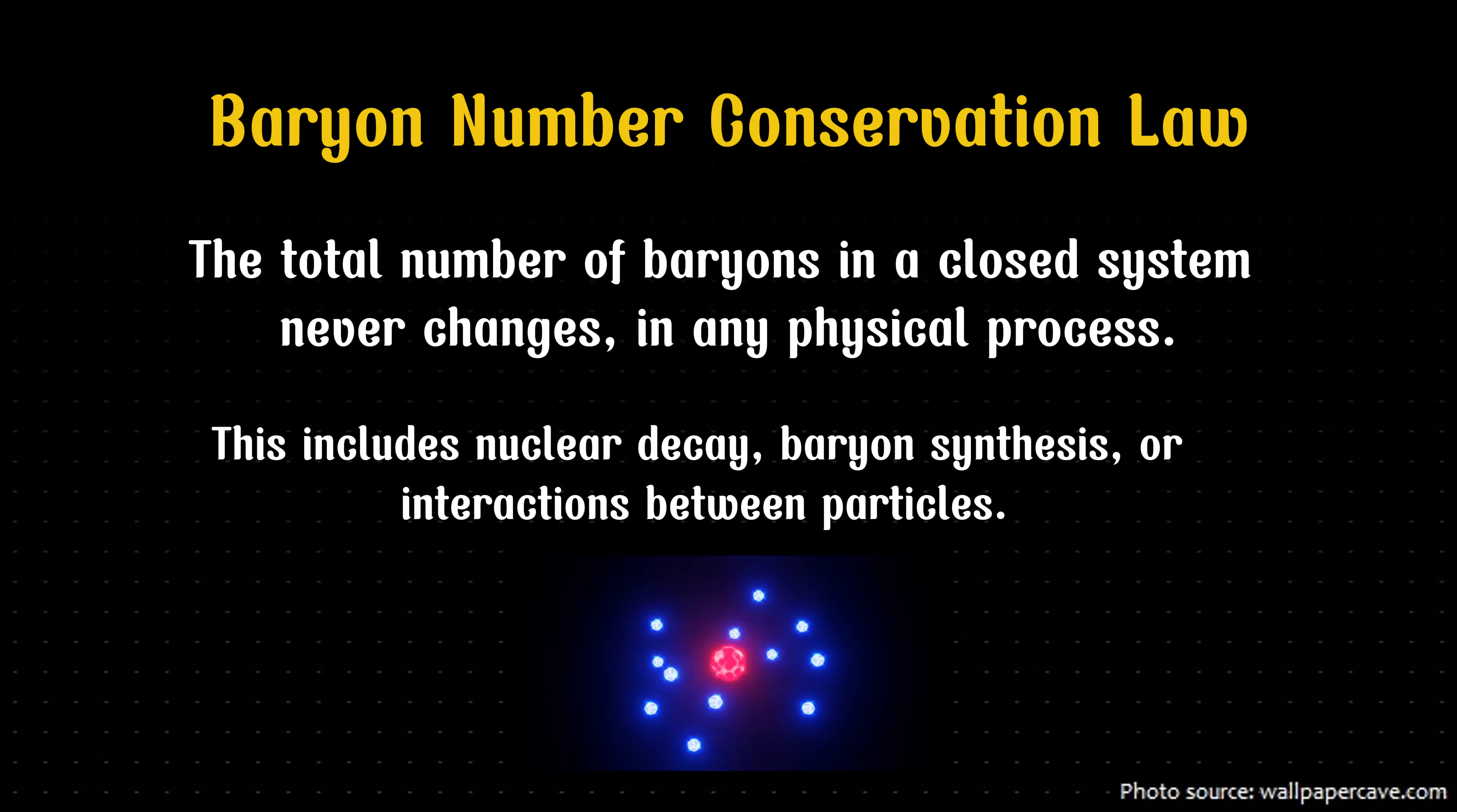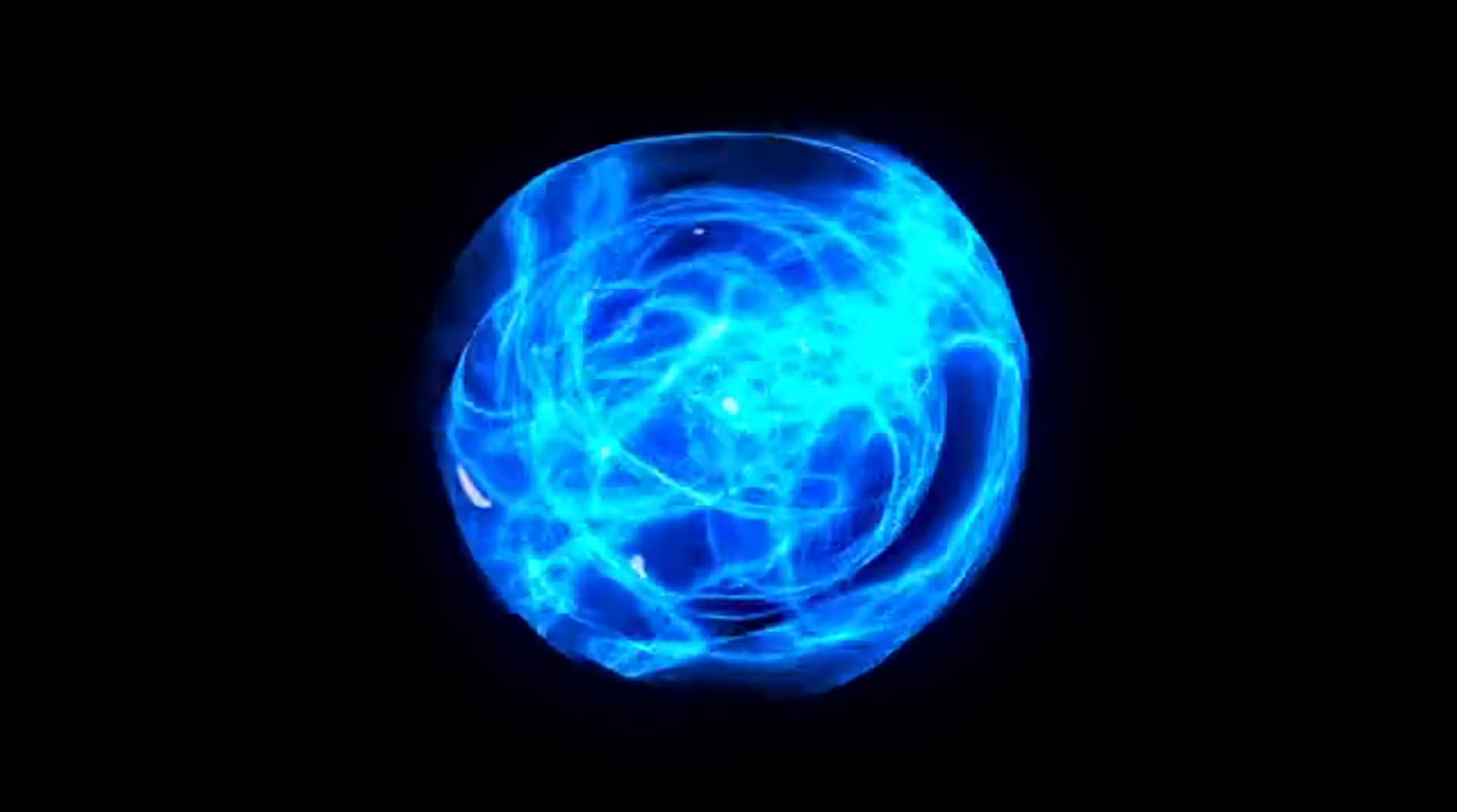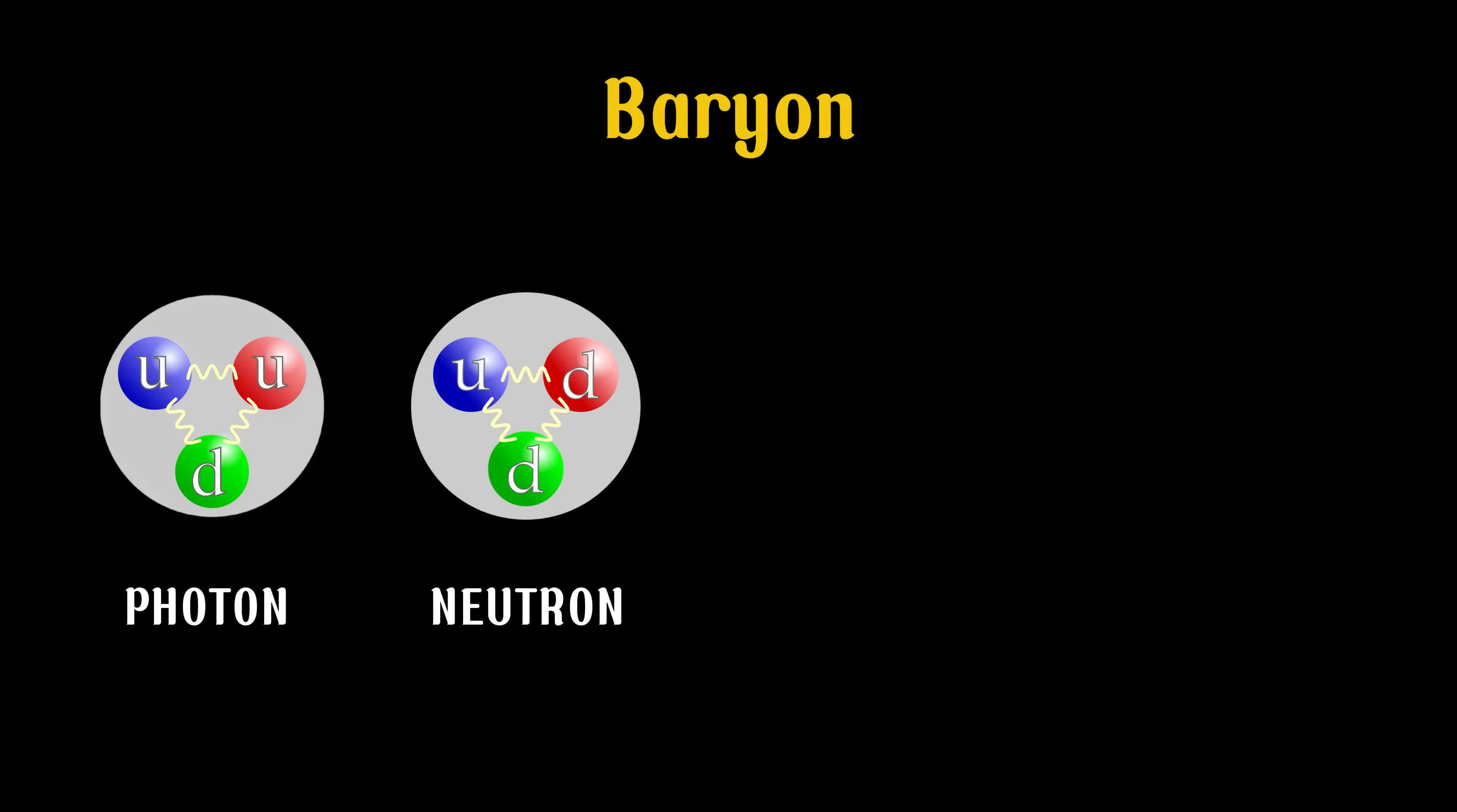Physicists estimate that a proton's lifespan is at least 10 to the 34th years. That's 10 quintillion, quintillion years. But what makes the proton so resilient? In nuclear physics, there's an unbreakable rule called the Law of Baryon Number Conservation.